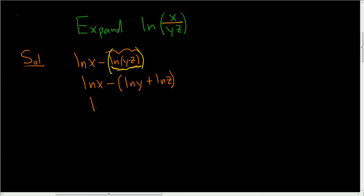So now this is the natural log of x, and we'll distribute the negative one that's here. So this is minus natural log of y minus natural log of z. And that's the answer. So kind of a sneaky problem. You have to be really, really careful.